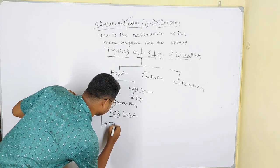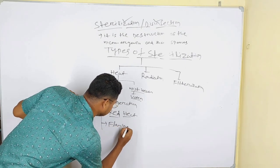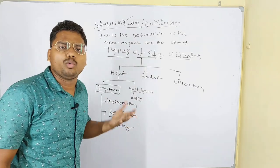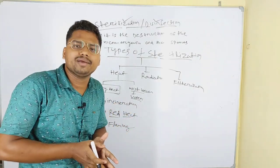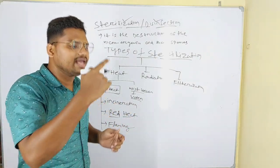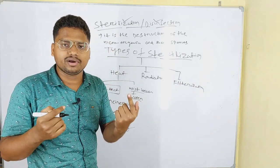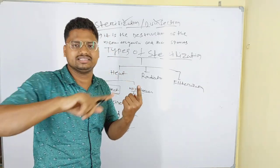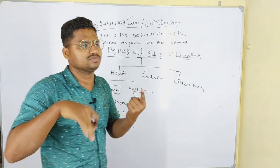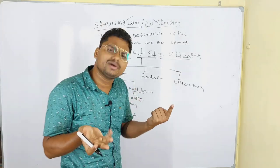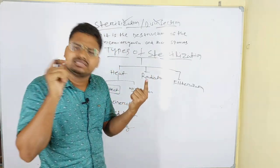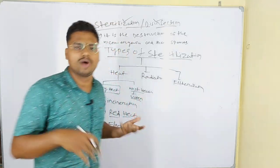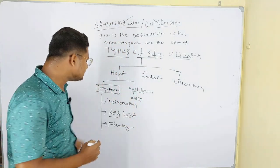The next type is flaming — F-L-A-M-I-N-G. Flaming means we have a Bunsen burner and we pass materials through the flame. Whatever materials we have, we pass them through — that is called flaming.